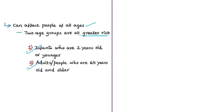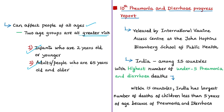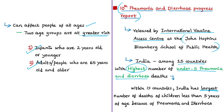Pneumonia accounts for around 15% of all deaths of children below five years of age worldwide. In the 10th Pneumonia and Diarrhea Progress Report Card, released by the International Vaccine Access Center at the Johns Hopkins Bloomberg School of Public Health, India is listed among the 15 countries with the highest number of under-five pneumonia and diarrhea deaths — and has the largest number of such deaths. In 2017, around 2.3 lakh children in India died because of diarrhea and pneumonia.